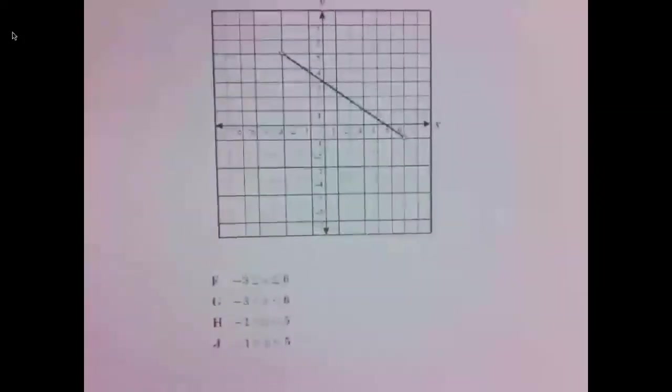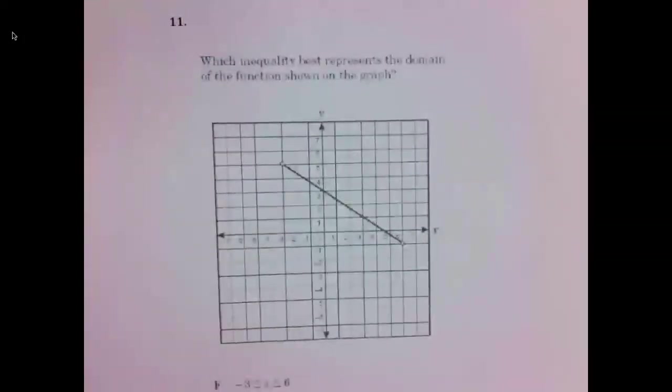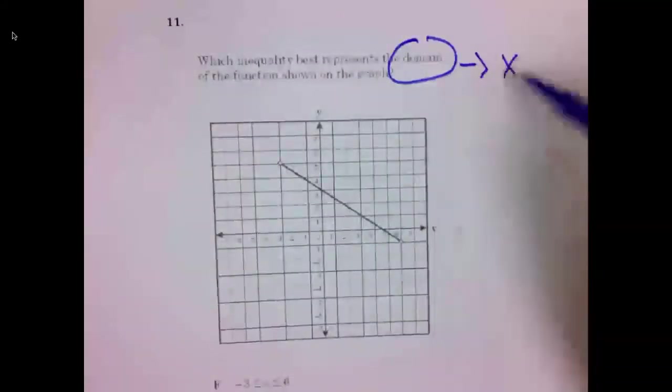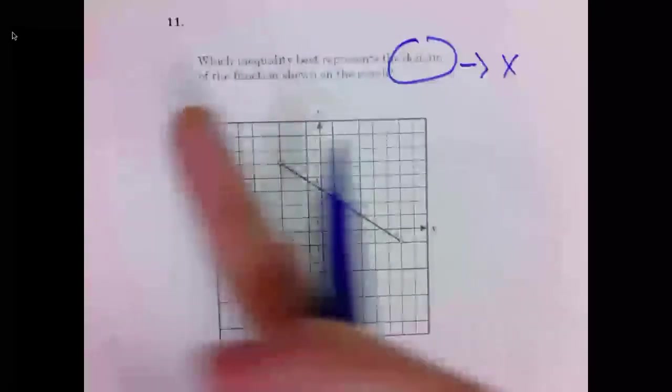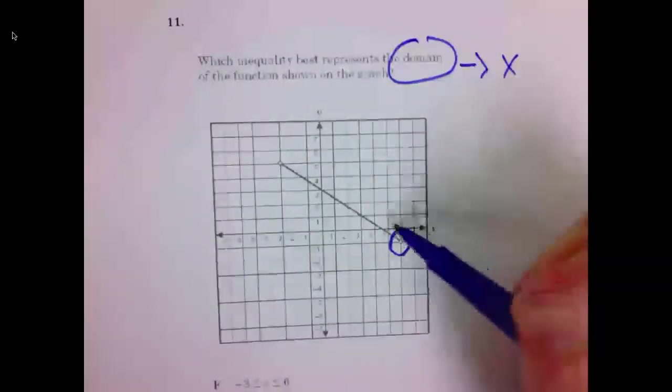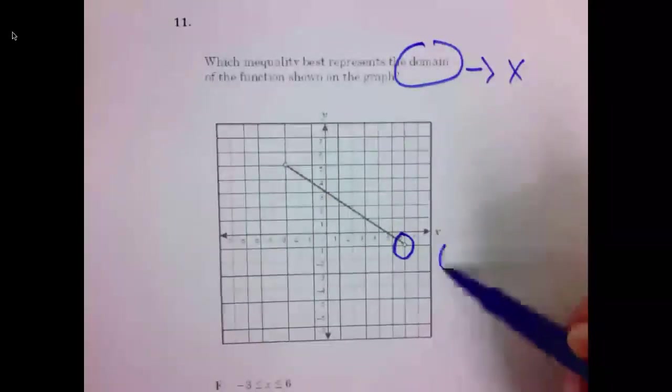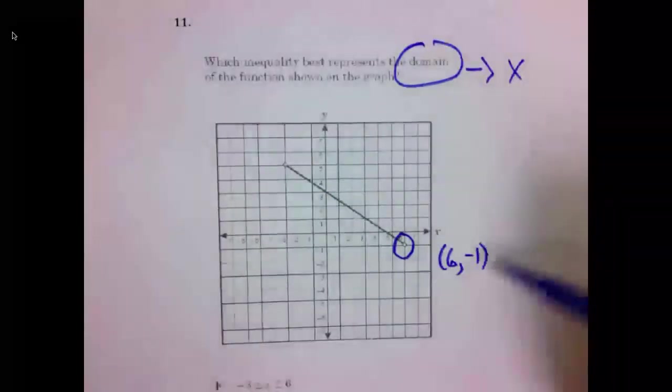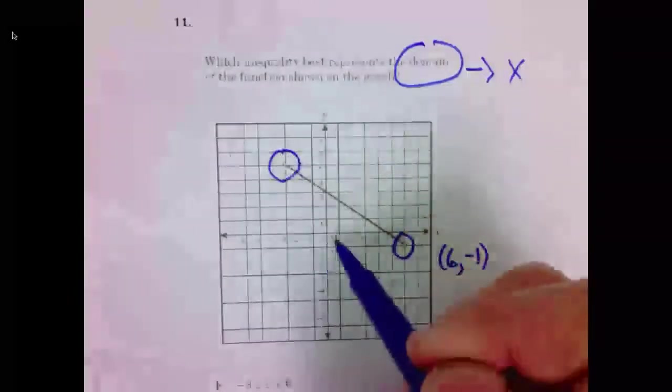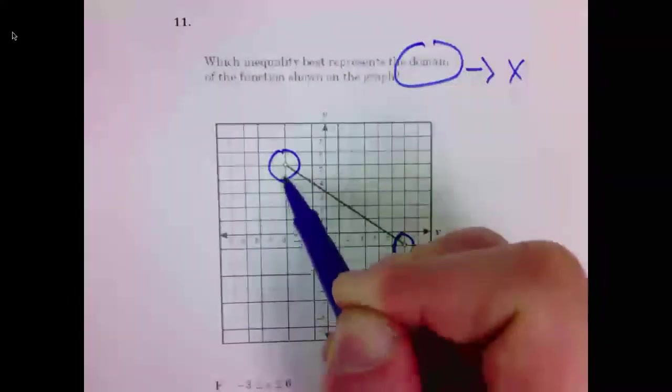Final question. Number 11. We are looking for the domain. And domain we know is X. So we want to consider how far left and right the graph goes. This point here that is open is 6, negative 1. The point to the far left, also open, is negative 3, 5.